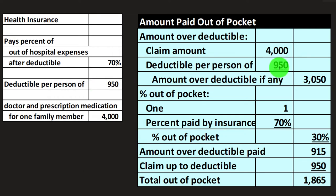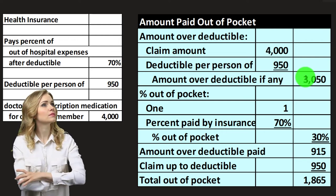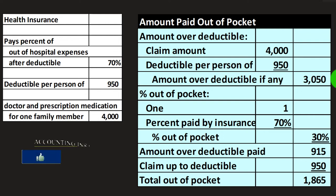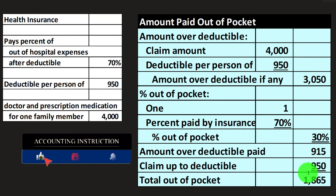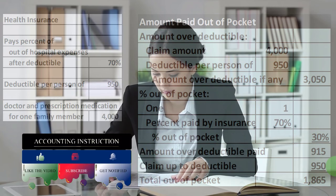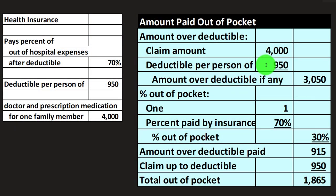The same Excel concepts apply here. If the claim amount was less than the deductible, the amount over the deductible should go to zero — handle that with an IF calculation using a logic function. Similarly, for the deductible portion, we're only paying the $950 if we clear the deductible; if the claim is below the deductible, we'd take the lesser of the claim or the deductible using a MIN function. Practicing these functions in Excel with this data set lets us adjust inputs and verify calculations across different scenarios.